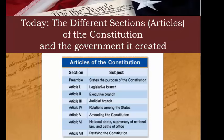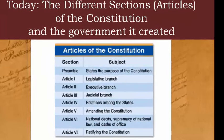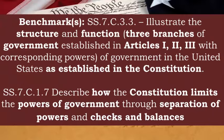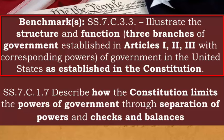Today we're going to look at the seven different sections of the Constitution, which are known as the Articles. This leads to two of our benchmarks. Our first benchmark says to illustrate the structure and function of the three branches of government established in Articles 1, 2, and 3, with corresponding powers of government in the United States as established in the new Constitution.